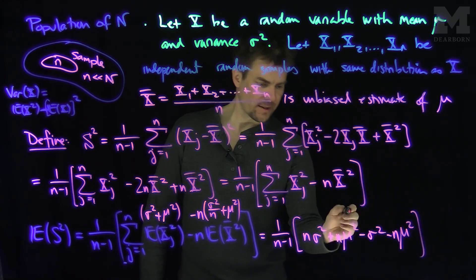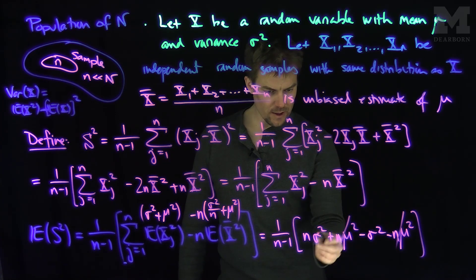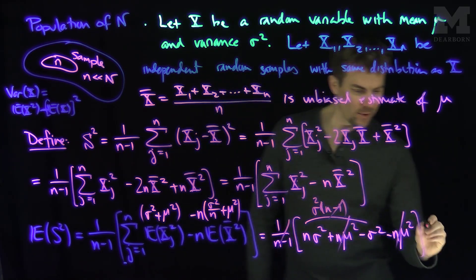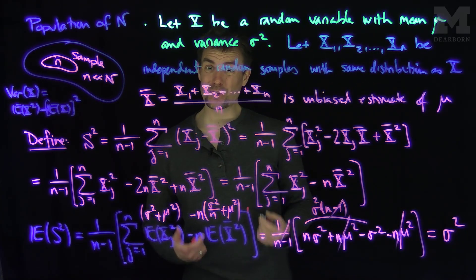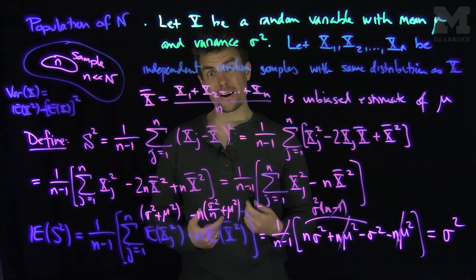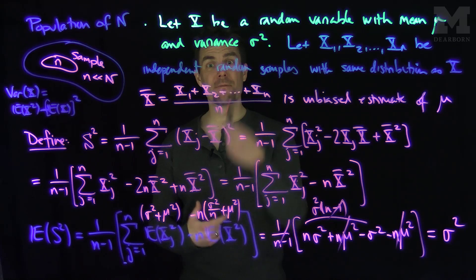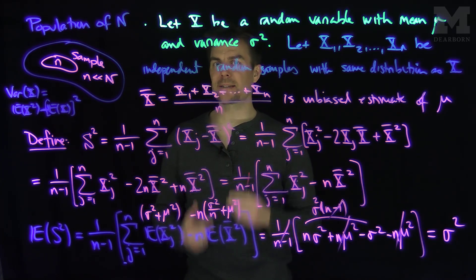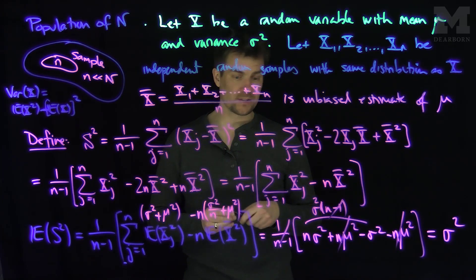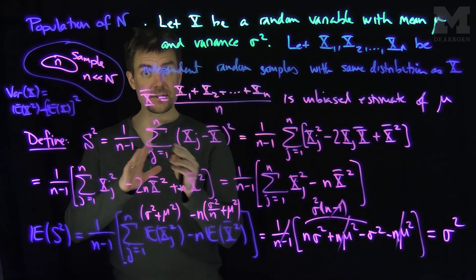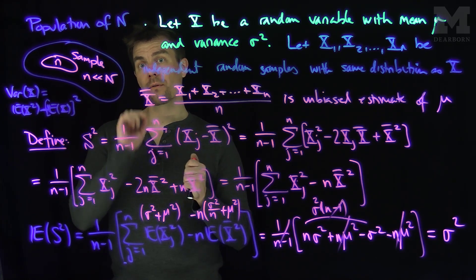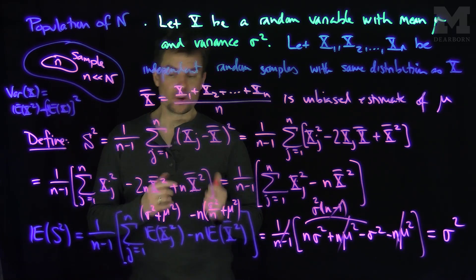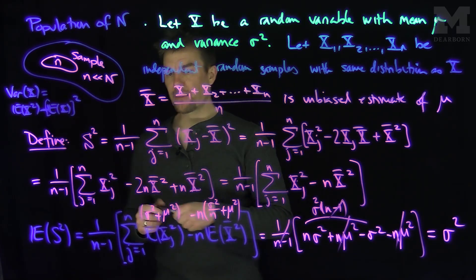Combining everything: E[S²] = 1/(n−1) · [nσ² + nμ² − σ² − nμ²] = 1/(n−1) · σ²(n−1) = σ². The n·μ² terms cancel, leaving σ²(n−1), which cancels with the 1/(n−1) factor. So the expected value of S² is exactly σ², meaning S² is an unbiased estimator of the population variance. Note the 1/(n−1) factor — not a pure average — is what makes this work.